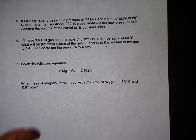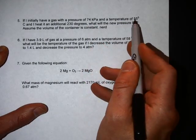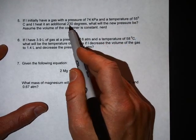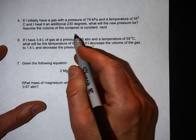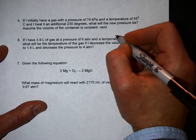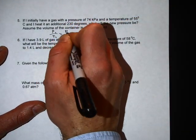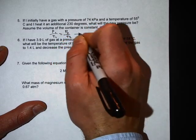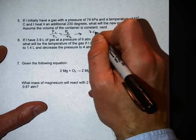And problem number five: let's see, you've got a gas at 74 kPa, it's 55 degrees celsius, heated 230 more degrees, what's the new pressure? Assume the volume of the container is constant. So volume is constant, that's just pressure over temperature, P1 over T1 equals P2 over T2.